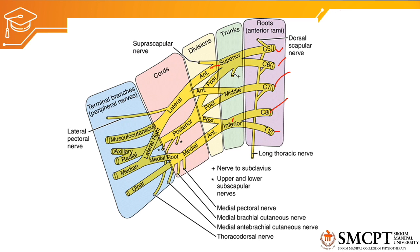The trunks divide into anterior and posterior divisions. The anterior divisions of the upper and middle trunk form the lateral cord. The posterior divisions of the upper, middle, and lower trunk form the posterior cord. The anterior division of the inferior trunk forms the medial cord. The medial cord gives fibers to the ulnar nerve and some fibers to the median nerve. The lateral cord gives fibers to the musculocutaneous nerve and the median nerve. The posterior cord gives fibers to the axillary nerve and the radial nerve.